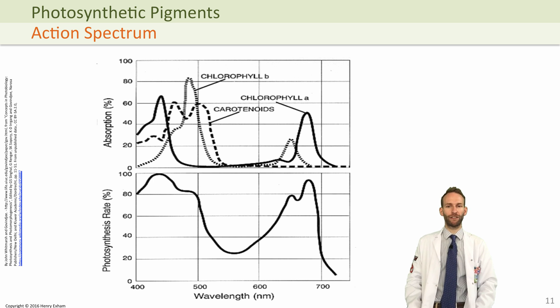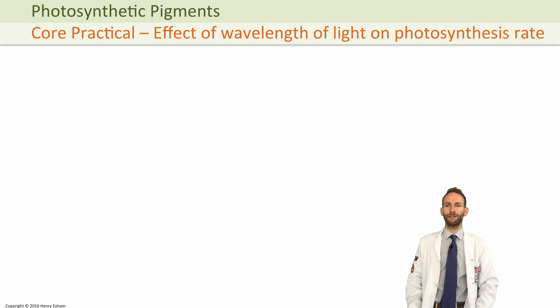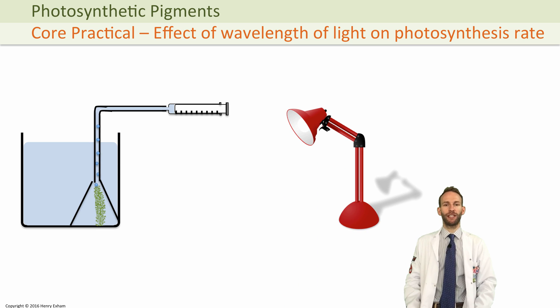Another practical you may have to do is look at the difference in wavelengths and how that affects rate of photosynthesis. You could take some pond weed, for example, and put it in a beaker of water, and you can measure how much oxygen it produces as an indication of how fast it's photosynthesizing.